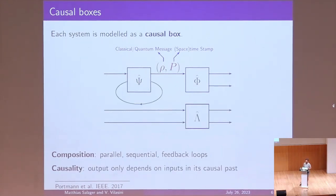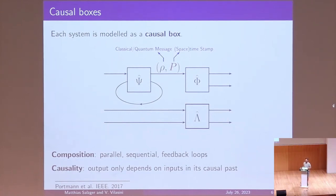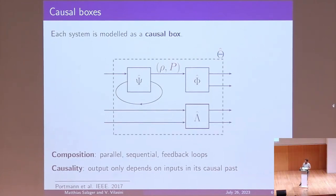You can do composition with causal boxes: take the output of causal box psi and feed it as input into causal box phi, do parallel composition, or even feedback loops. You might expect feedback loops to lead to a grandfather paradox, but this is where the spacetime stamps are relevant. What happens is that we produce an output, and the spacetime stamps ensure that the output cannot influence itself — only a later output can be influenced by this input. So you can think of this as a lab device producing outputs in one round, then reusing those as inputs for the next round.